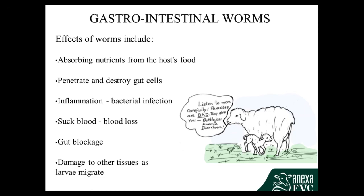Gut blockage is more of a problem when you get large burdens of parasites in an animal and then treat them with drench, because all the worms die at the same time and can build up at the places where the intestines naturally narrow, causing a blockage. This is quite rare but will sometimes happen with animals that haven't been wormed in a long time.